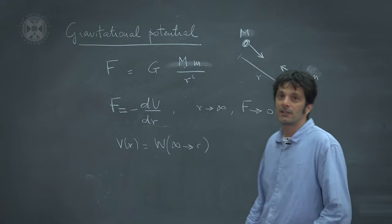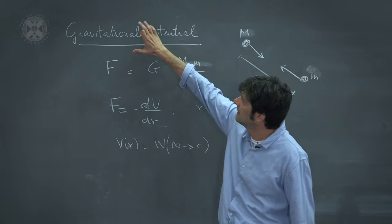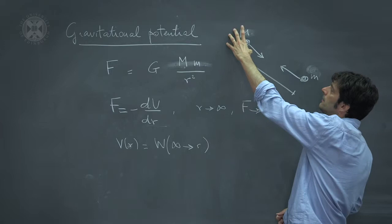So the final argument that we want to discuss within Newtonian mechanics is the gravitational potential. We're going to consider two bodies, one with mass capital M,